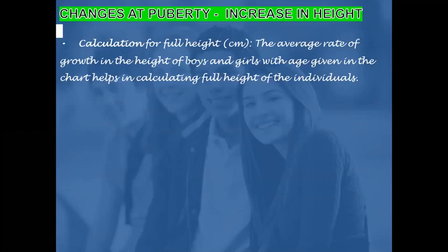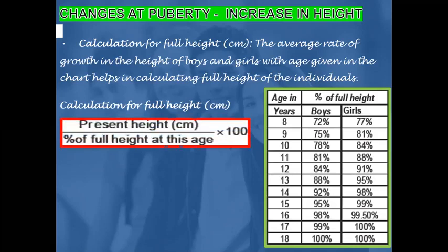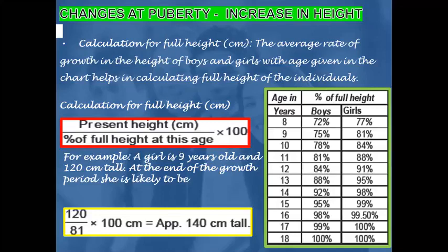The average rate of growth in height of boys and girls with age is given in a chart to help calculate the full height of individuals. The formula for full height in centimetres is: present height in centimetres divided by the percentage of full height at this age, multiplied by 100. For example, a girl is 9 years old and 120 centimetres tall. Her full height would be 120 divided by 81, multiplied by 100, which gives approximately 140 centimetres.